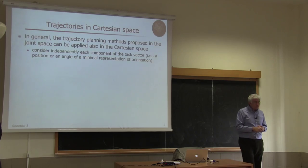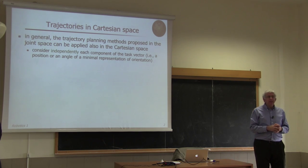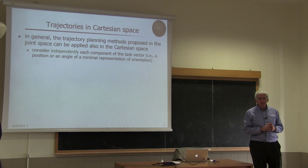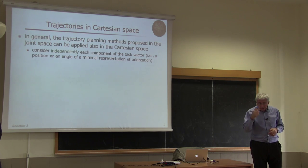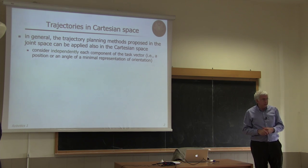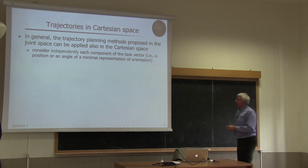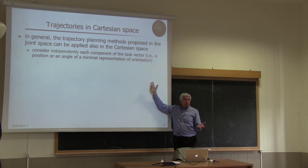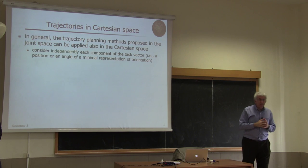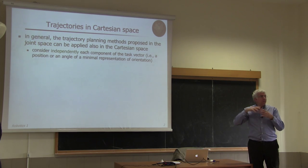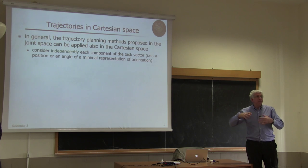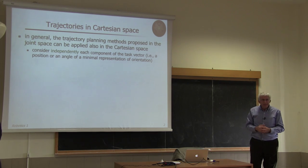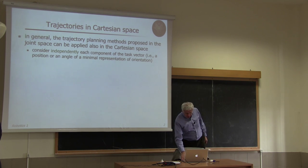If you have orientation, as in Cartesian space, this makes things different, because then you have to use a minimal representation of orientation, and treat each angle of this minimal representation as one of the joints—one of the components of the task vector—and split your problem accordingly. From one perspective it seems the same thing, maybe even simpler, since you have up to six components in Cartesian space. If you have a more generalized task space you will have m components, but again you can treat them separately, like n separate joints.